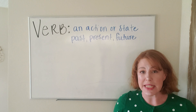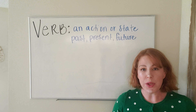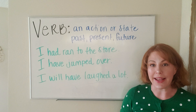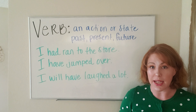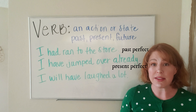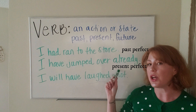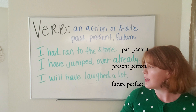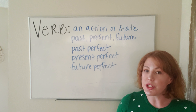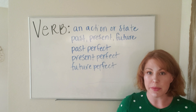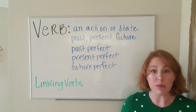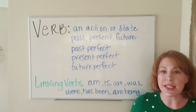If we're trying to describe an action or a state happening at a specific point in time, we might use perfect tenses. In perfect tenses, you use the linking verb 'had' to help describe a specific point in time. In our past perfect tense: 'I had ran to the store.' In our present perfect tense: 'I have jumped over already.' In our future perfect tense: 'I will have laughed a lot.' There's a last type of verb we use without realizing it — linking verbs. Linking verbs are all forms of the verb 'to be,' as well as 'to become' or 'to seem.' They link the subject of the sentence to another verb or to the rest of the sentence.